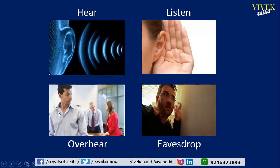So the takeaways from today's session: First, 'hear' should not be used in progressive action — it is an involuntary, automatic action. Second, 'listen' requires attention and is useful. Third, 'overhear' means some conversation or information reaches your ears without your knowledge. Fourth, 'eavesdrop' is something you do secretly. And the grammar rule: 'listen' must always be followed by 'to.' These are the takeaways from today's discussion. Thank you.